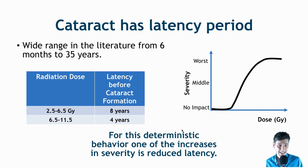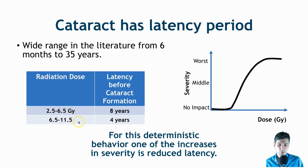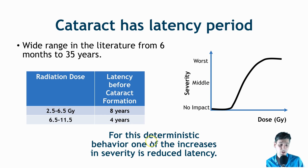Cataracts also has a latency period. For these deterministic effects, the impact we're discussing is the latency — the amount of time before cataracts will be induced. If the radiation dose is within 2.5 to 6 gray, we're looking at about 8 years on average before the cataract forms. If the dose is 6.5 to 11.5 gray, it's only about 4 years — so the increase in severity is actually the reduced latency.